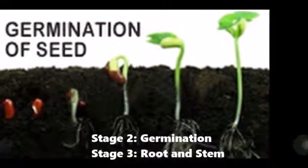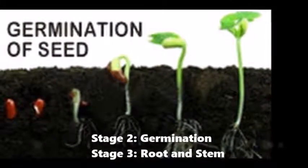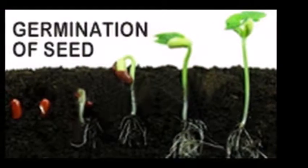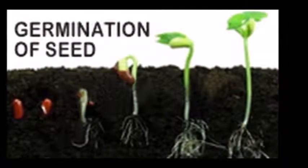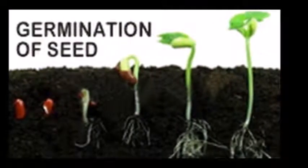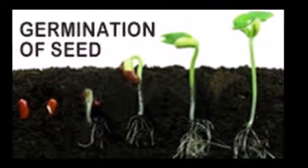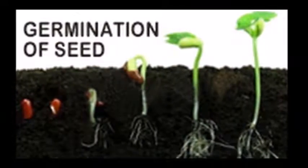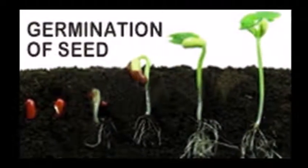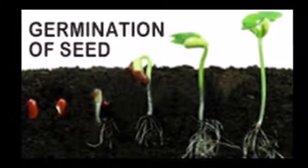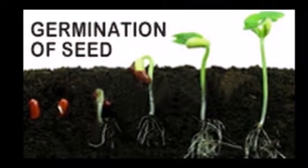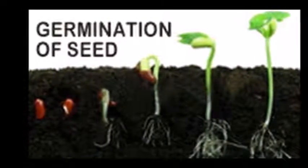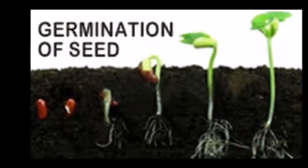The second stage of the plant life cycle is germination, also known as when the root in the plant starts to grow. With the help of soil, sunlight, and water, this is how the root in the seed starts to grow and sprout out of the seed.